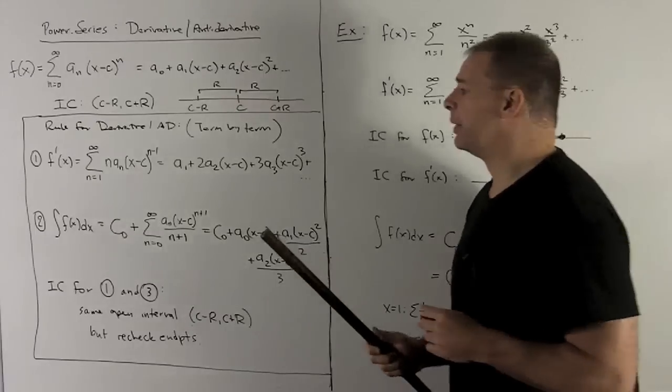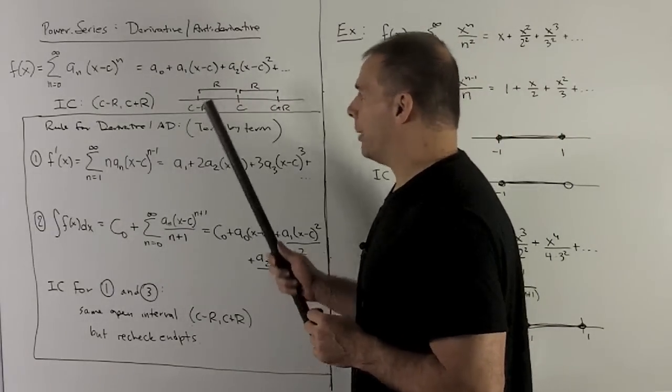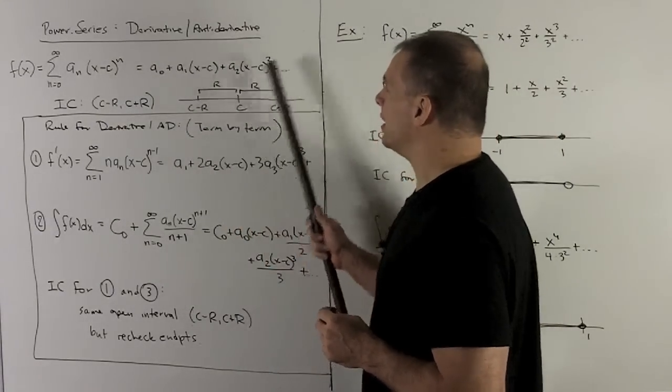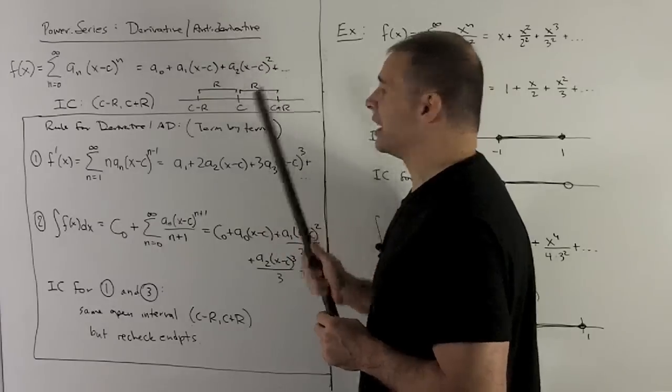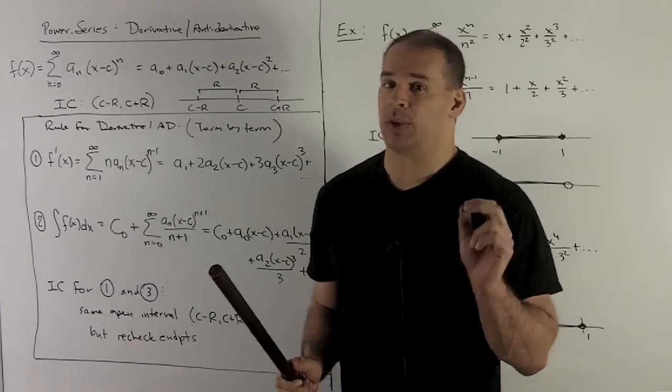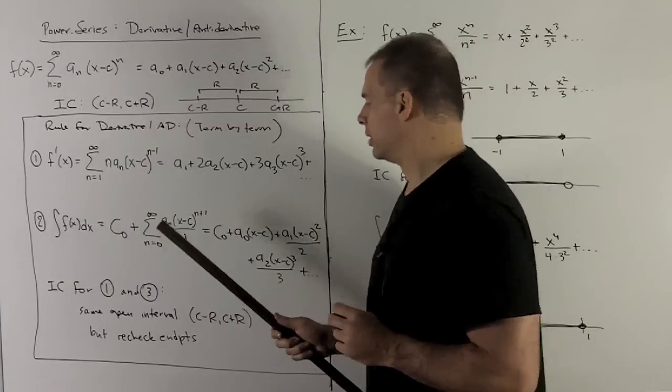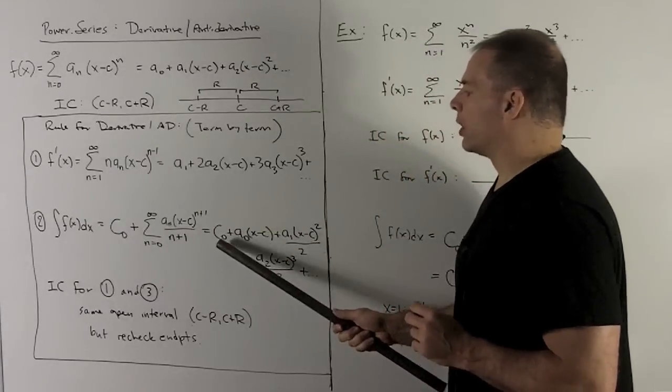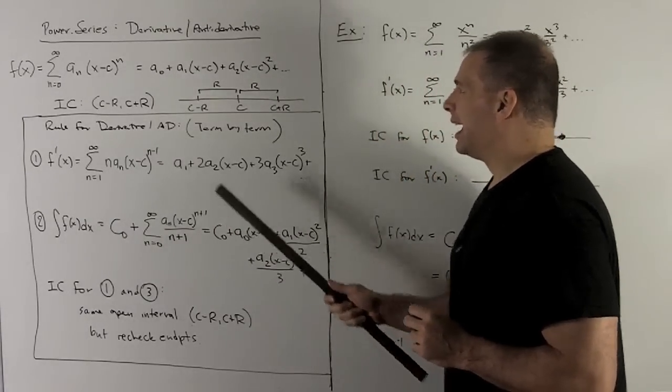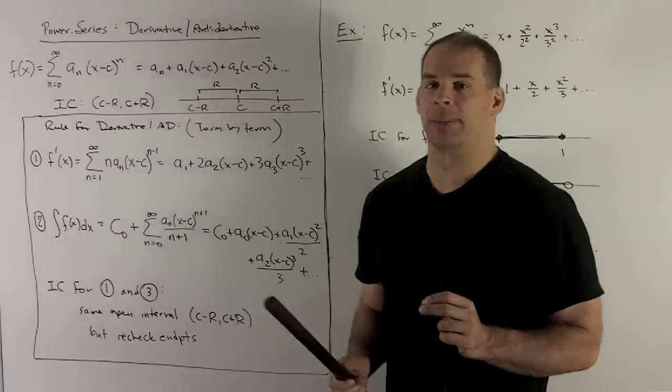For the antiderivative, what are we going to do? We're going to go through term by term, take all the antiderivatives of each piece, add them together. And since we're doing an antiderivative, I also throw in a constant of integration. So what's going to happen? First, we'll throw in our constant of integration. Antiderivative of a zero is just going to be x.